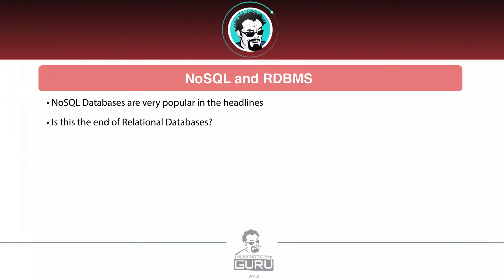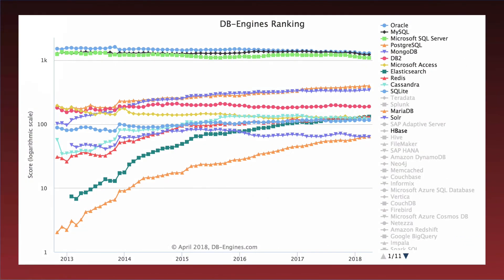Now let's look at what happens when we mix in NoSQL databases. NoSQL gets a lot of press in IT headlines, and some people say it's going to kill relational databases. Looking at popular NoSQL databases, MongoDB is by far the most popular, with Redis and Cassandra also very popular. They address specific needs in the marketplace and are gaining popularity — but are they the end of relational databases? I really don't think so. Some people are a little premature in calling for the demise of relational databases — they're going to be around for some time because they're simply very good at what they do.